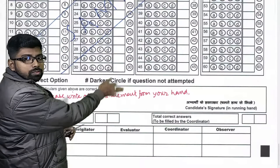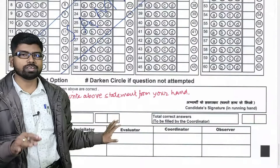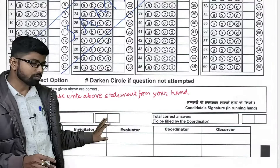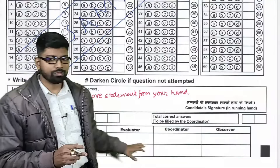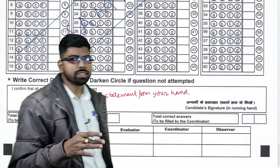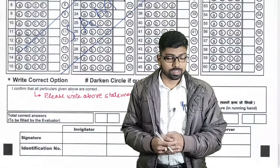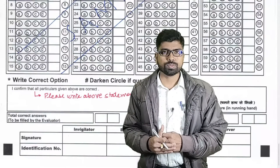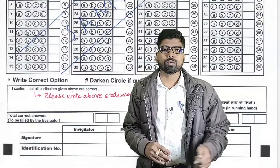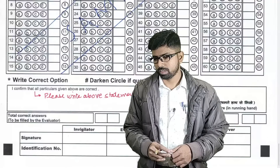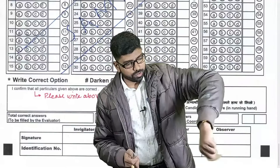The final section of the OMR is for the evaluator, where they record how many questions were attempted and correct, and the observer signs there as well. This is then handed over to the superintendent as part of the official process. From the next class, we will be discussing sample question papers on Physics, which will help students learn and attempt Physics questions very well. Goodbye.